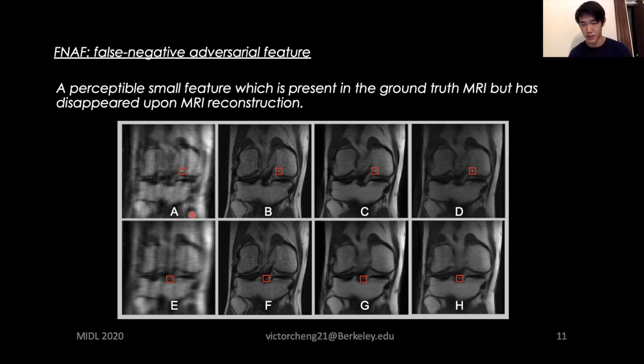We define these cases as false negative adversarial features, which is FNAF in short. They are a perceptible small feature which is present in the ground truth MRI, but has disappeared upon MRI reconstruction. So potentially, if we can find all these edge cases and patch them, then we can be sure that the reconstruction method would not miss them. So how do we find them? If we see FNAF as an adversarial example, then finding FNAF can be posed as an optimization problem. Then we can take a step back and look at the principle of finding an adversarial example.